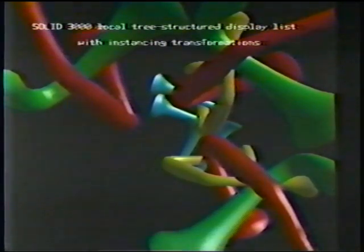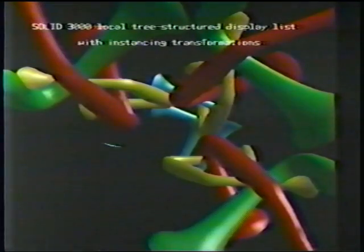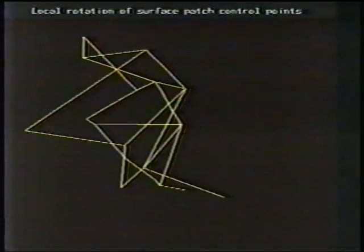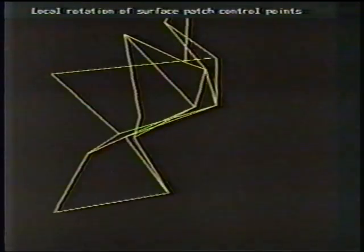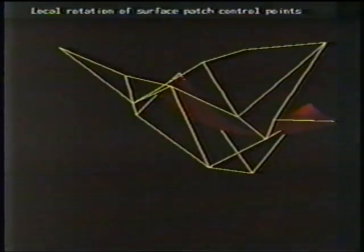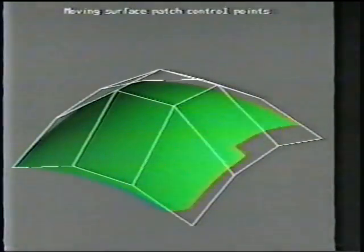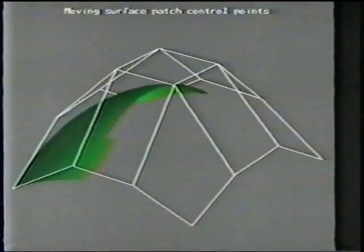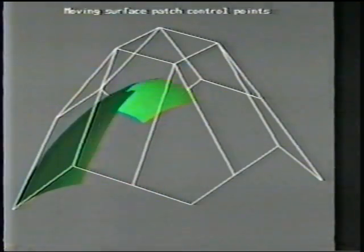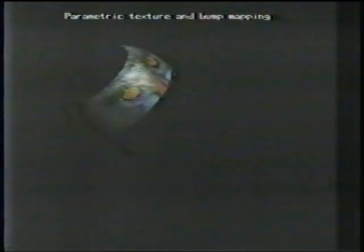This ability to do instancing and to have local transformation capability is all included in the Solid 3000 package. Here's the local transformation capability being displayed — here's a patch, and we're just providing a rotation to it. The user can also interact with control points for defining surfaces; here you see a simple surface with the control points being manipulated by the user.